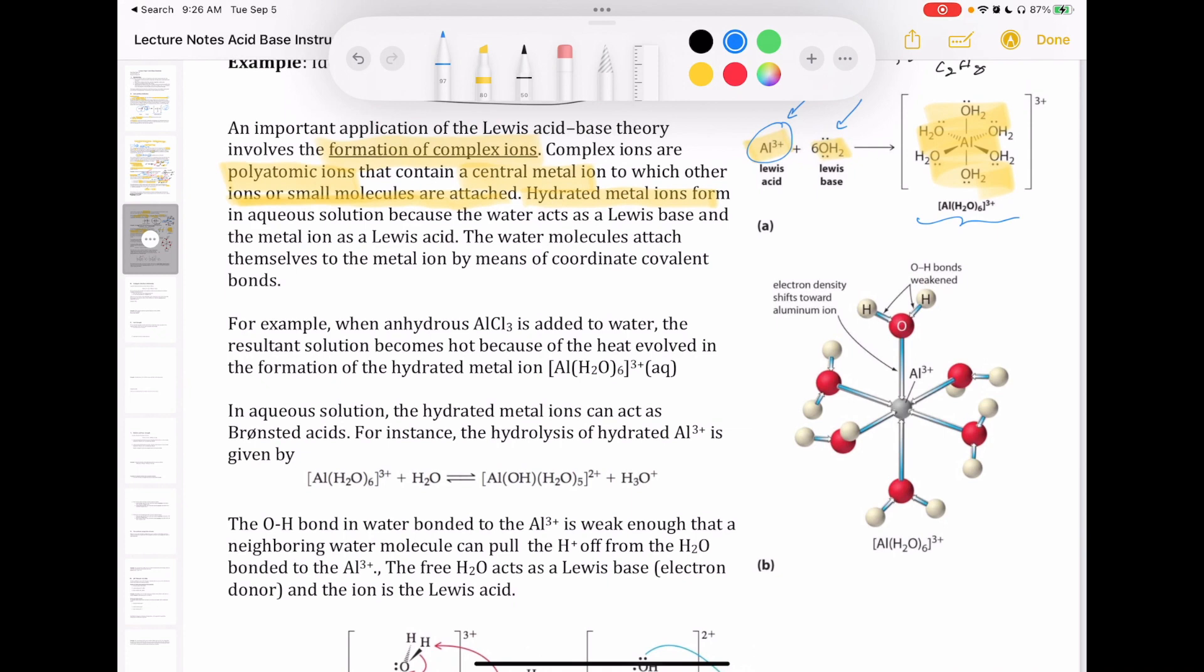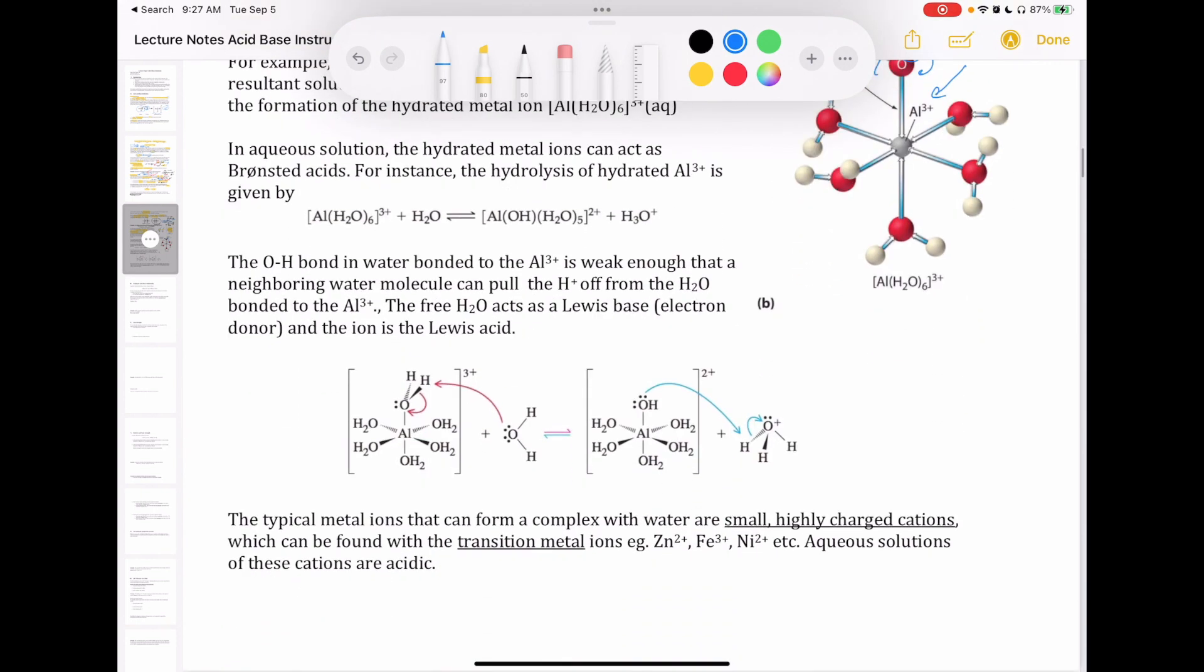Because of the positive charge in the aluminum ion, that has a really strong pull on the electron. So that pulls the electron between oxygen and hydrogen in the water so that that weakens that bond because more of the electron is pulled towards the oxygen because the aluminum is pulling on it. And that weakens the bond. It's just easier to break that bond. And so, in fact, see this reaction happen.